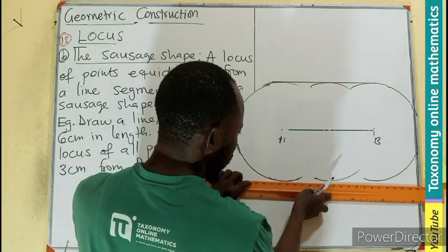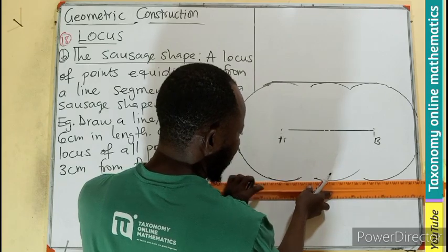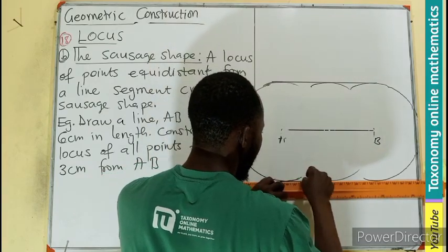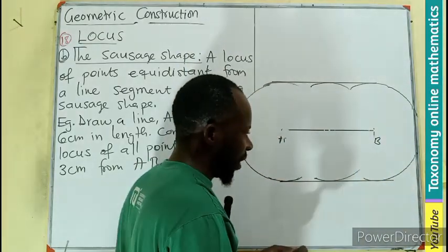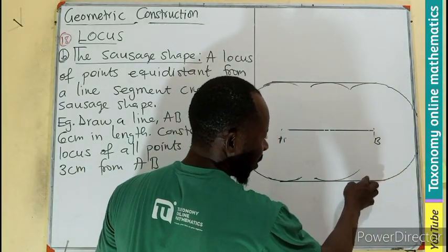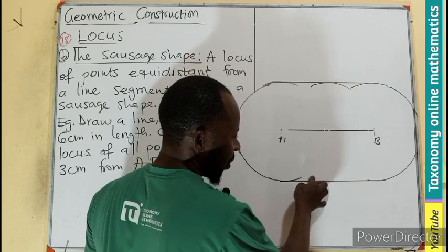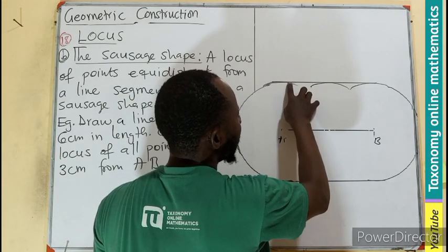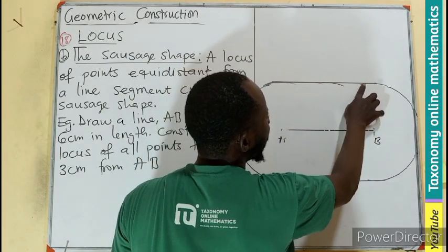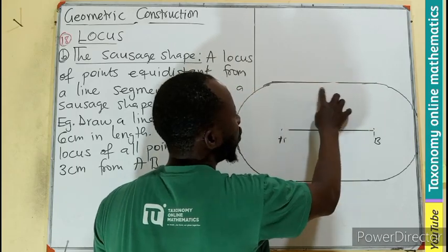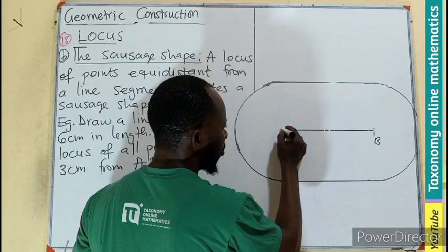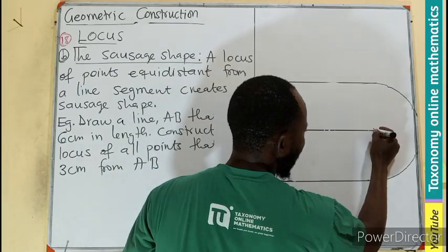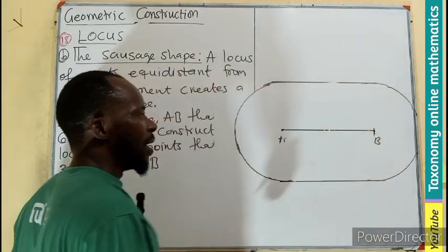If I take care of these lines inside, you can see that we are going to give rise to a sausage shape. This is our line, the points A and B. You can see this looks like a sausage whereby the distance between A and this wall will be three centimeter.